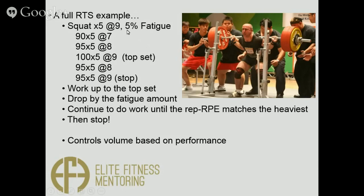Now we want to know how much volume you should do. We assess the fatigue — today's fatigue percent is five percent — so we drop five percent of the weight off the bar, back down to 95, and continue doing sets of five until we get back to a nine RPE. The first set at 95 for five reps is an eight RPE, so we're not there yet. We do another set — 95 again for five reps — and this time it's a nine RPE, so we stop. It took five percent less weight to produce the same rep and RPE pairing — that's five percent fatigue.